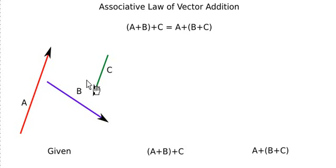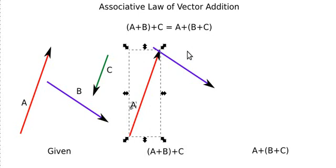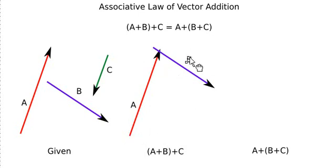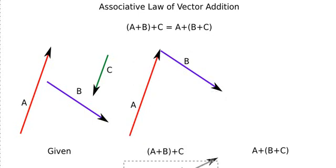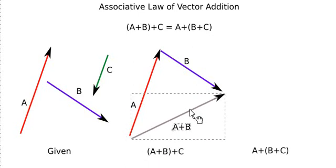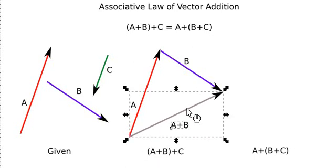So first, take the left-hand side and add vector a and b. To add vector a and b by the triangle law of vector addition, place vectors a and b such that the head of vector a coincides with the tail of vector b. To find the resultant, connect the tail of vector a to the head of vector b. By doing so, I obtain the resultant a plus b.